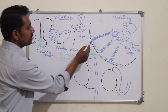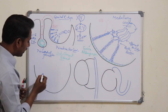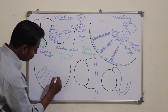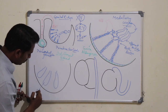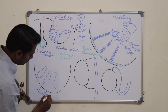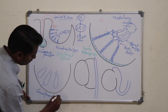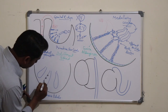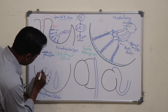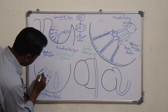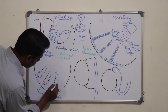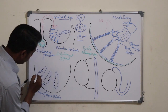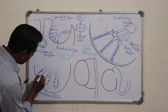The sex cords remain as solid structures until puberty. At puberty, these solid cord-like structures become canalized to form seminiferous tubules, which contain spermatogonia that have developed from the primordial germ cells, and Sertoli cells, which have developed from the cells of the medullary cords.